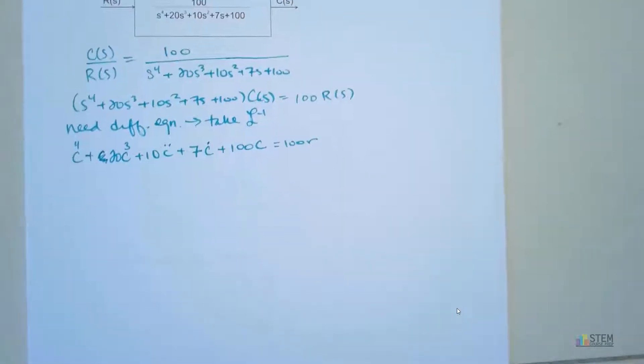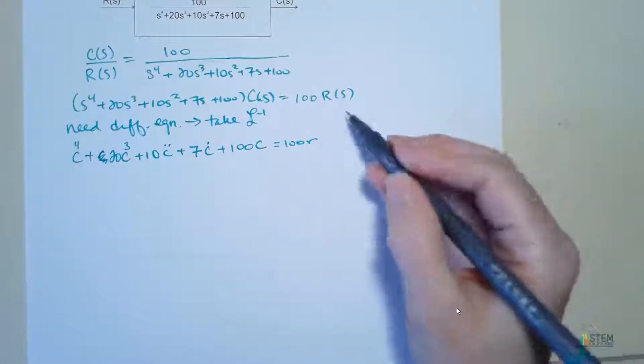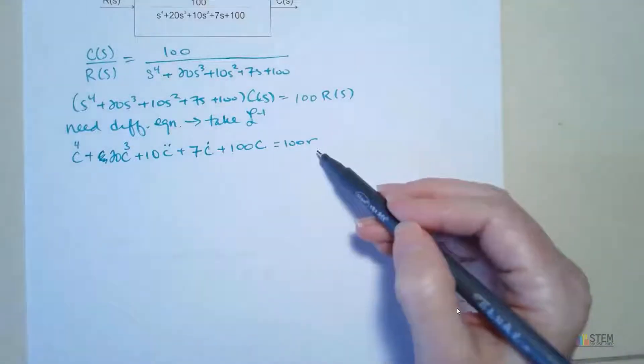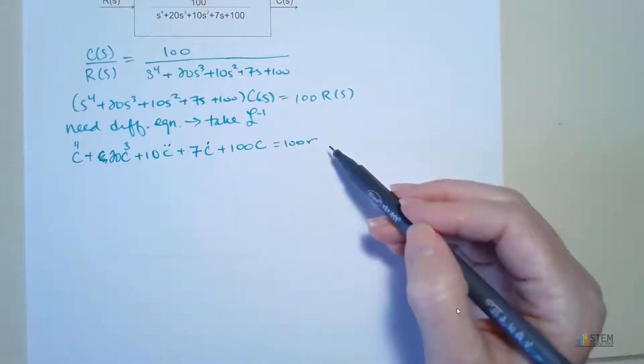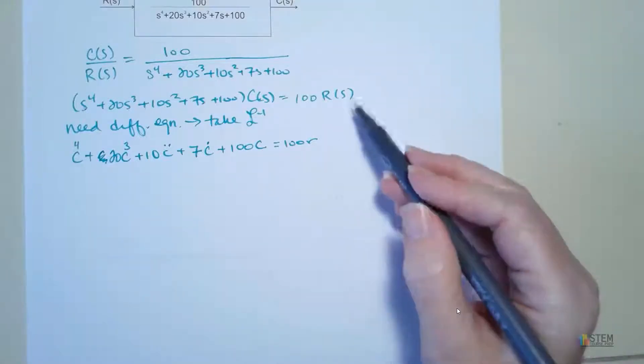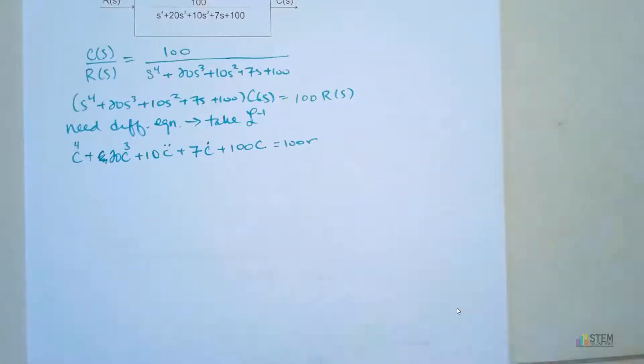So you just work backwards. And this is what you would do if you did the impedance method and you needed to get a differential equation. You just work backwards. Now we've got this.